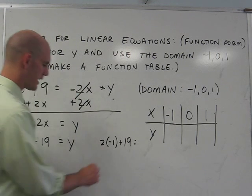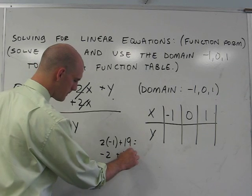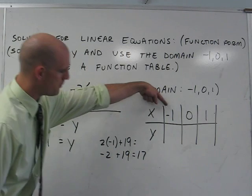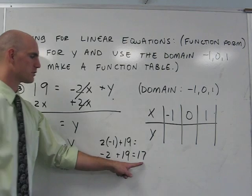2 times negative 1 is negative 2, and negative 2 plus 19 is 17. So y is equal to 17.